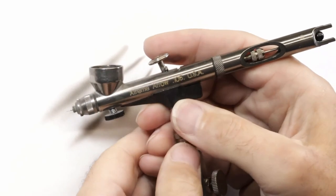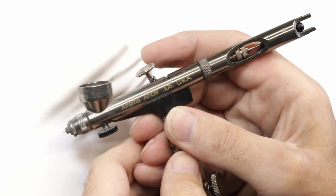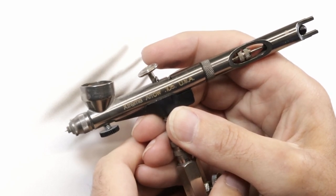When you do that, that's the number one thing you can do to minimize tip dry on these brushes. There are some other things, but by far keeping the air on all the time, that is the number one thing that will help you out.